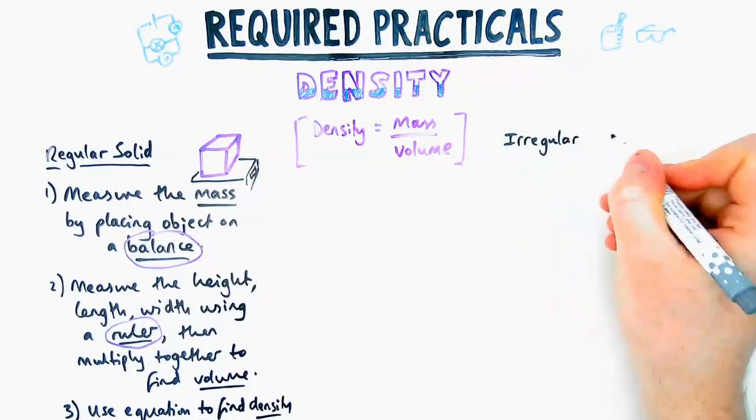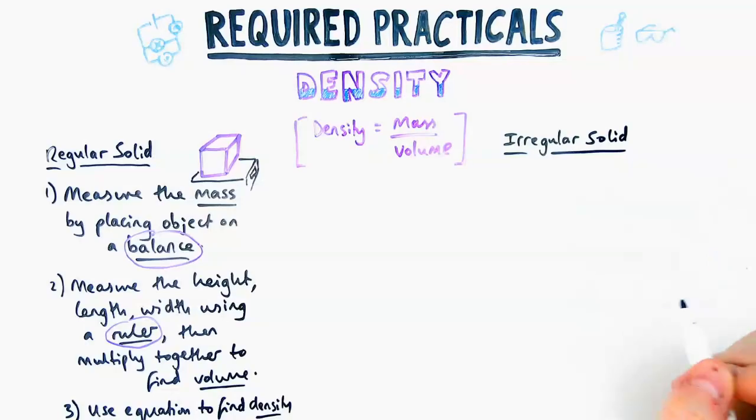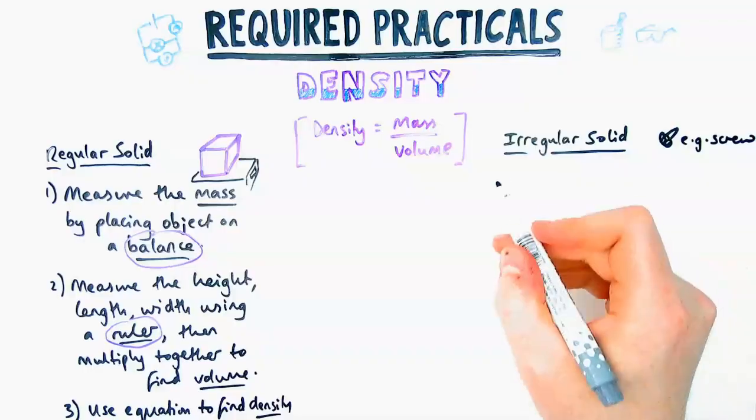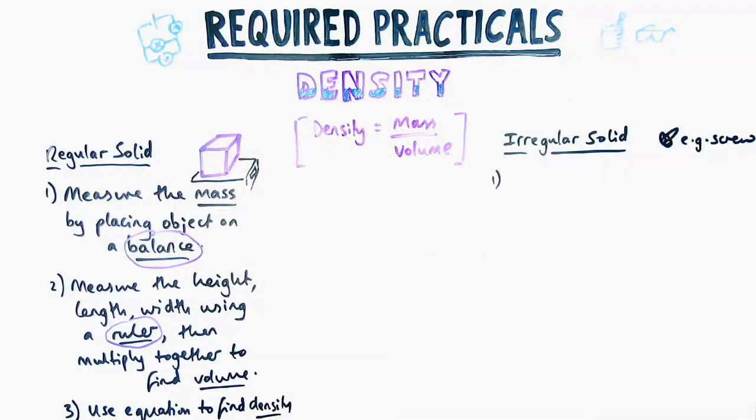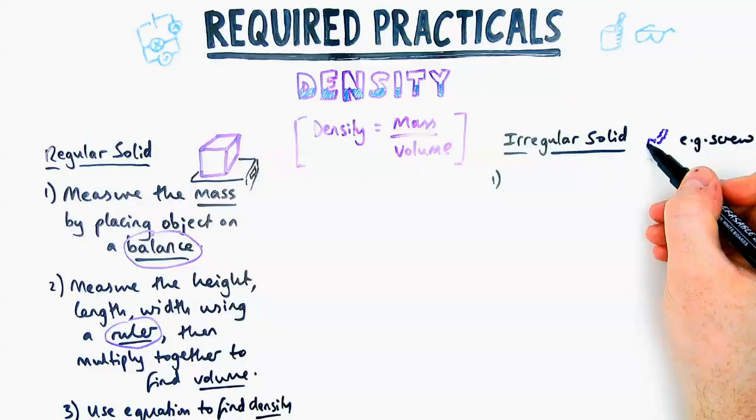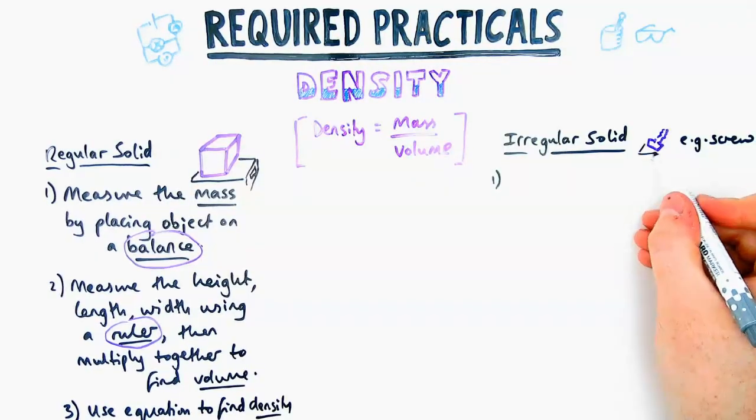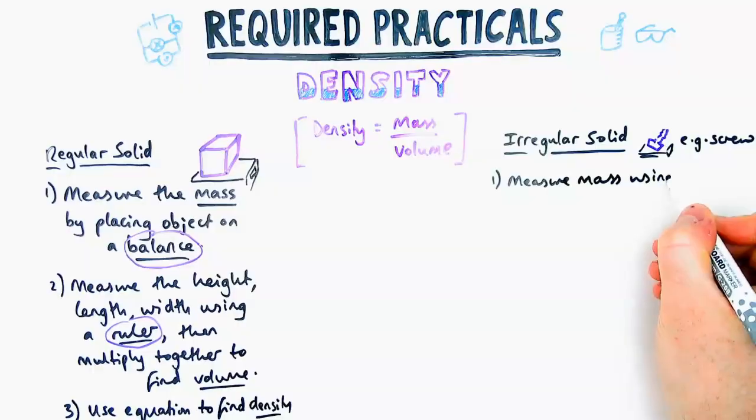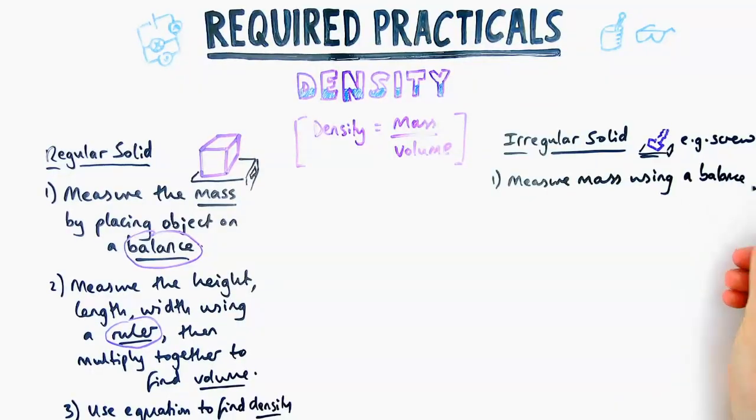An irregular solid is a bit trickier. By irregular solid, I mean anything that's not a regular cuboid, sphere, or cylinder - it could be a piece of metal, a screw, a statue, anything like that. The first step is exactly the same: to measure the mass, we place it on a balance.